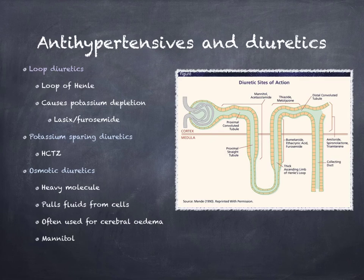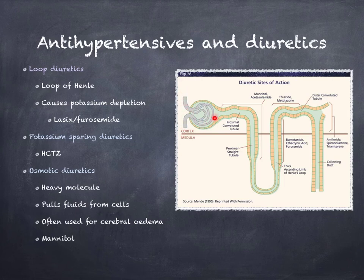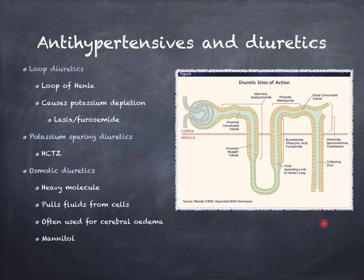Loop diuretics work on an area of the kidney known as the loop of Henle. Looking at the structure of the nephron — I have a picture here — I have the adrenal cortex, the adrenal medulla, the Bowman's capsule, and the capillary network. This whole area is known as the nephron, or the functional unit of the kidney. Components include the proximal convoluted collecting tubule, the loop of Henle, the distal convoluted collecting tubule, and the collecting duct, which dumps into the ureter and urinary bladder. Excretion and reabsorption of fluids and solutes occur along the whole length of the nephron.